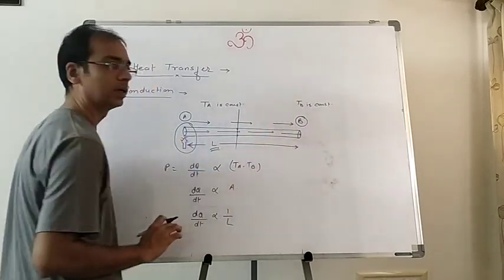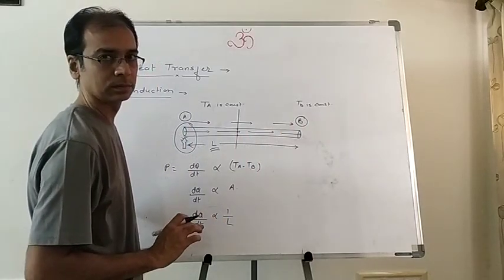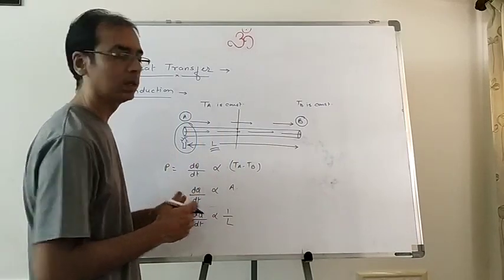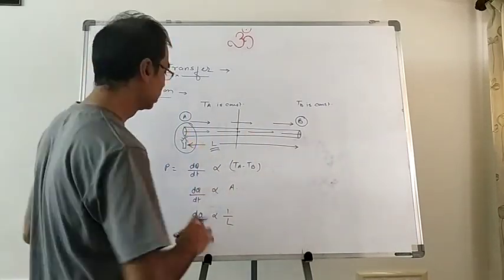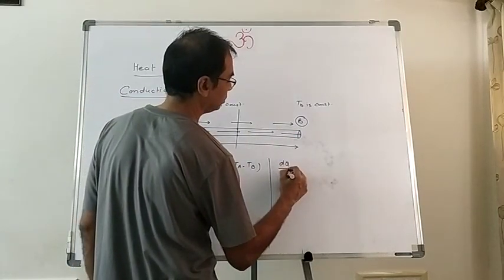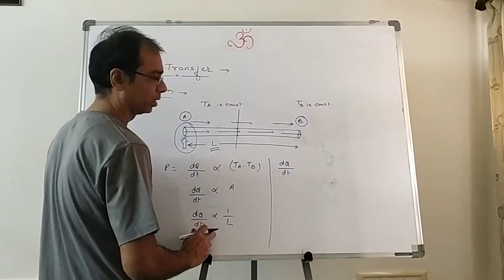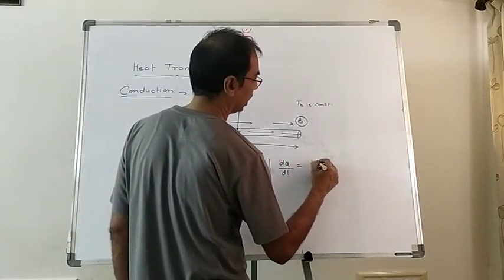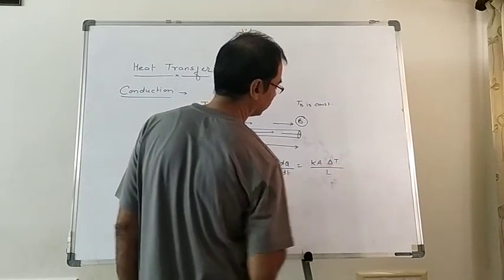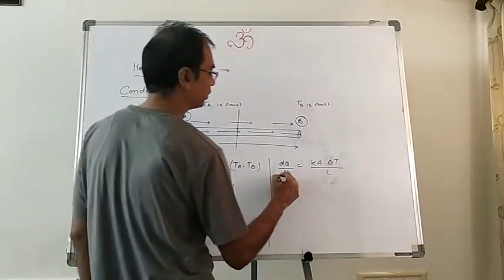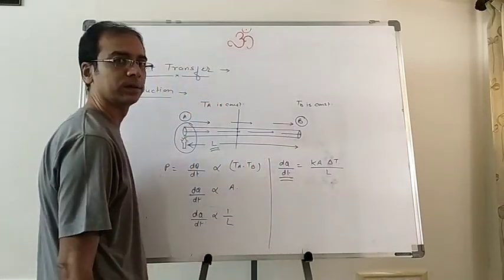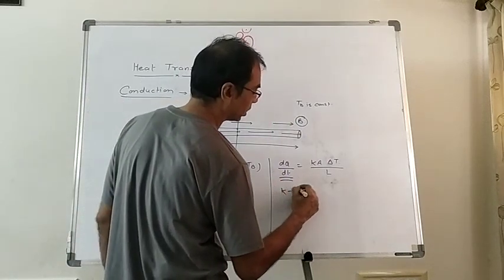More the length, the rate of transfer from one end to the other decreases because more molecules will absorb the heat. Combining these, we can write: dQ/dt = k·A·ΔT / L, where ΔT = T_A − T_B. This is the formula for heat being conducted from one end to the other. Here k is called the coefficient of thermal conductivity.